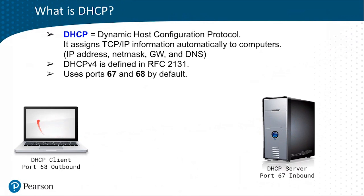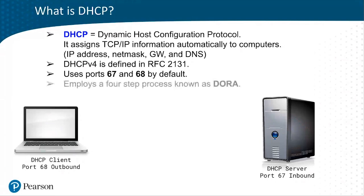On the left-hand side, we have a DHCP client. It has port 68 open outbound. Basically, when you turn on the client, it will broadcast out to the network in an attempt to find a DHCP server and hopefully obtain an IP address automatically.